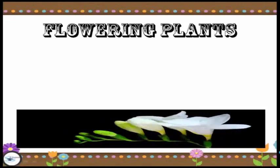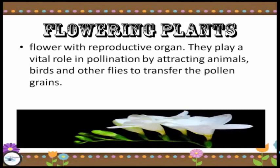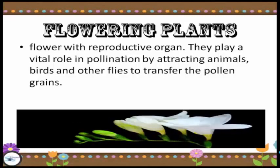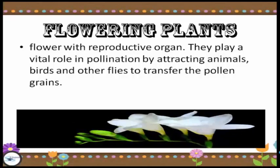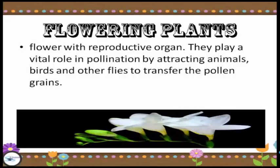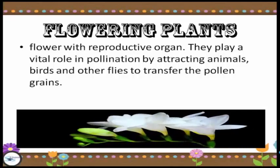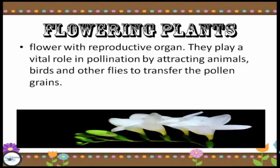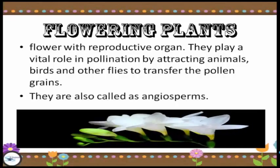So now let's define what flowering plants are. Flowering plants are plants with their protective organ. They play a vital role in pollination by attracting animals, birds and other flies to transfer the pollen grains. Even using wind, flowers can transfer the pollen grains. This is also called angiosperms.